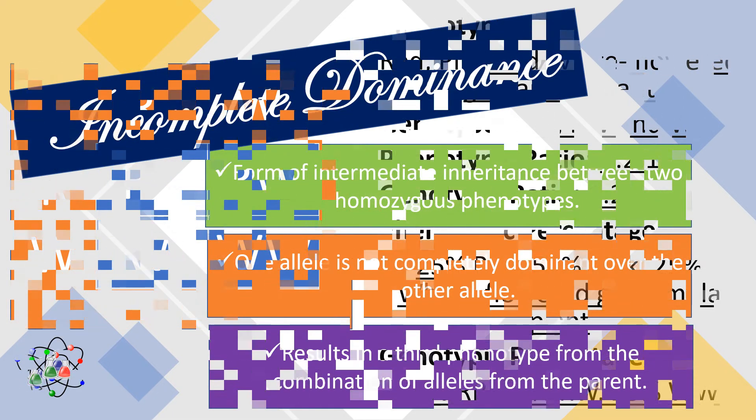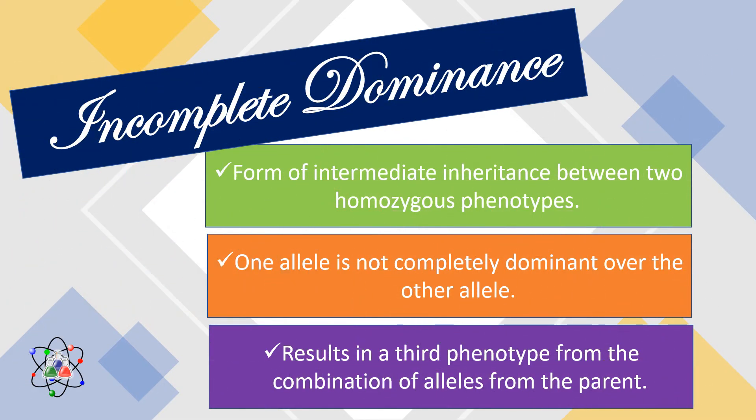Always remember that in incomplete dominance, it is a form of intermediate inheritance in which one allele for a specific trait is not completely dominant over the other allele. This results in a third phenotype in which the expressed physical trait is a combination of alleles from the parents.